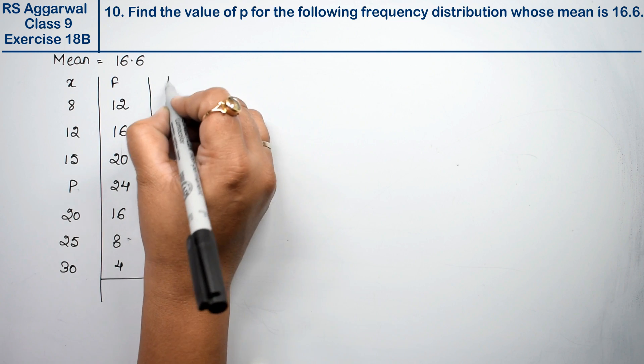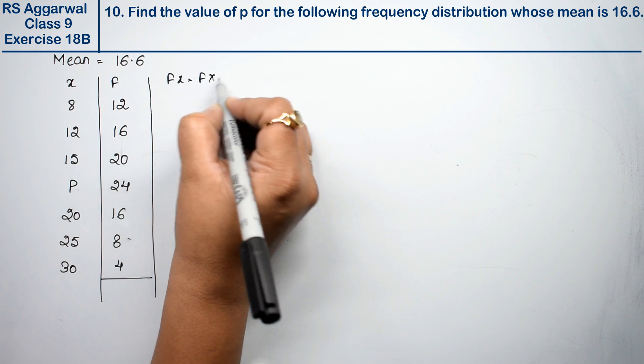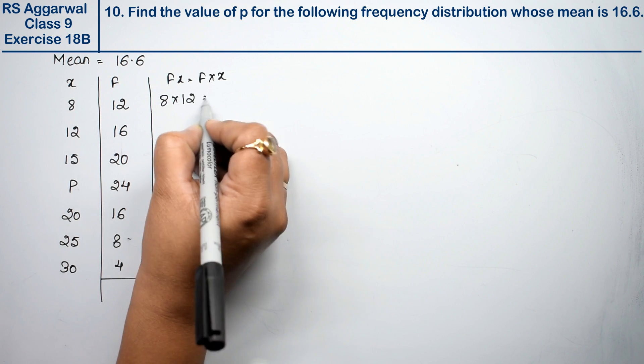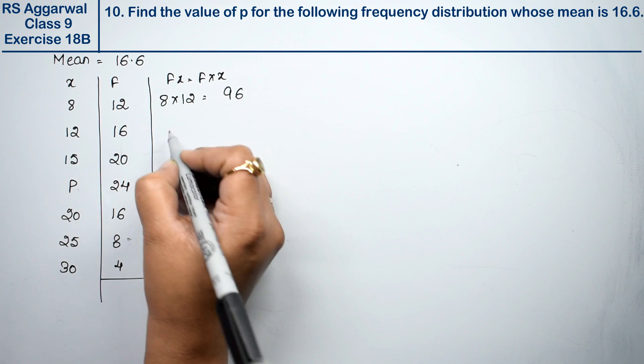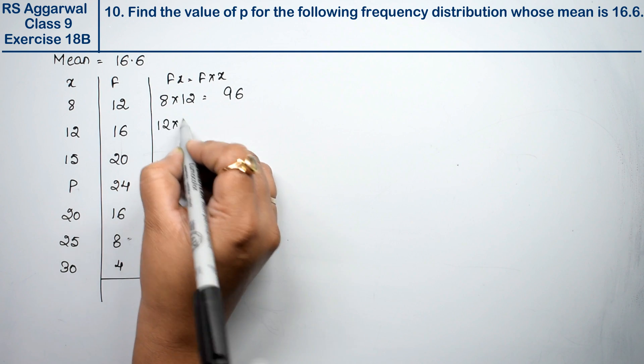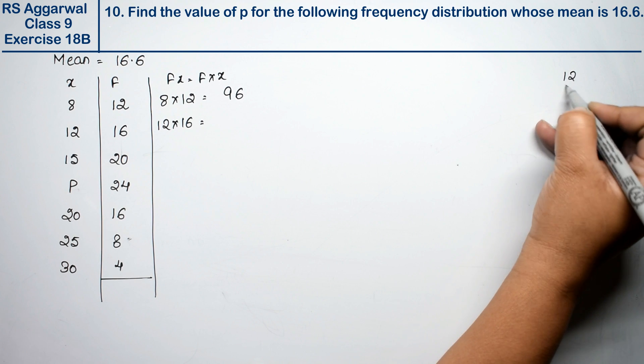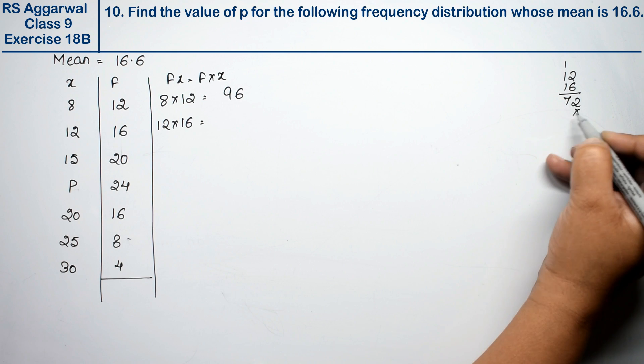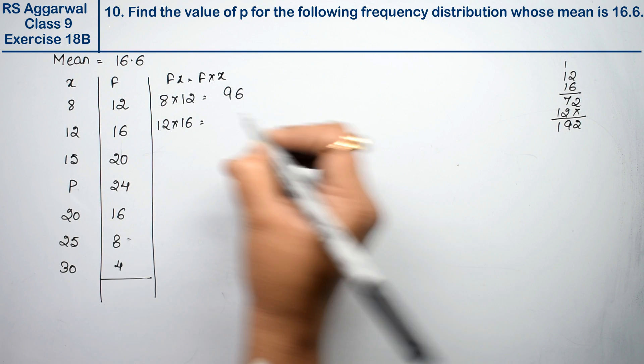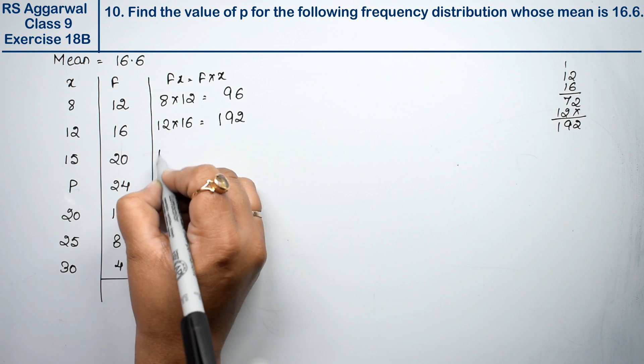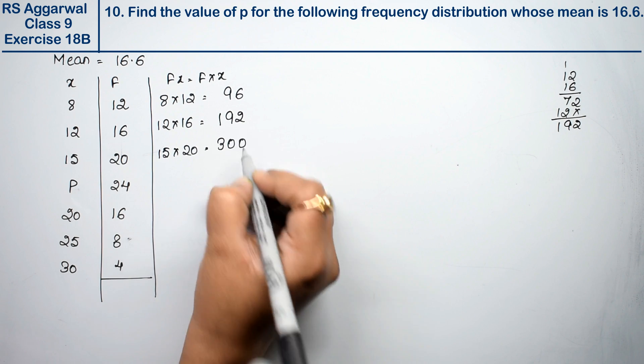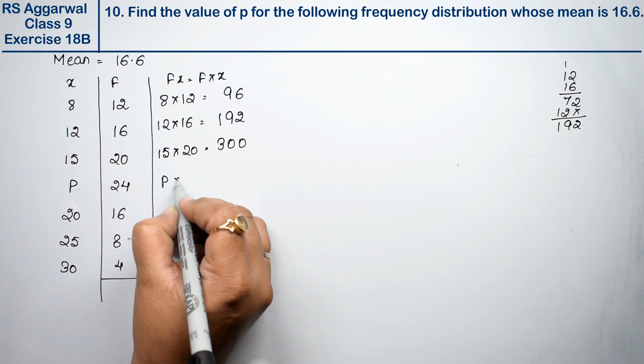Now we calculate fx for each row. 8 times 12 equals 96. 12 times 16: six 2s are 12, six 1s are 6, so that's 192. 15 times 20 equals 300, and p times 24 equals 24p.